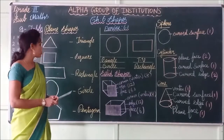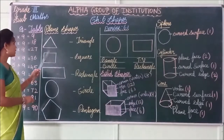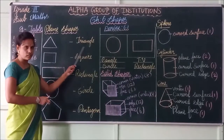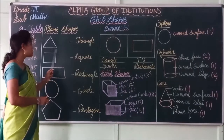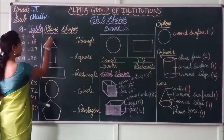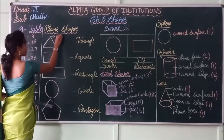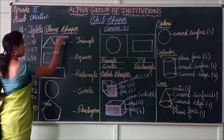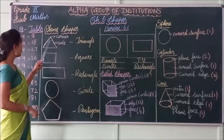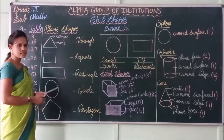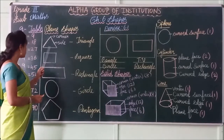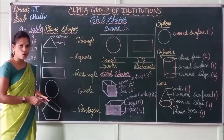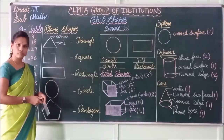See, these are all plain shapes. What shape is this? This is a triangle. In a triangle, this is a corner. We have 1, 2, 3 corners in a triangle. And 1, 2, 3 sides in a triangle.